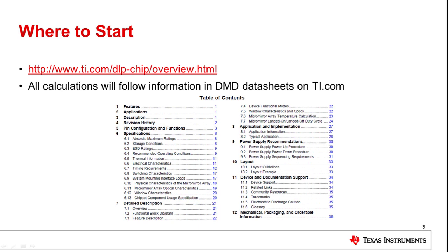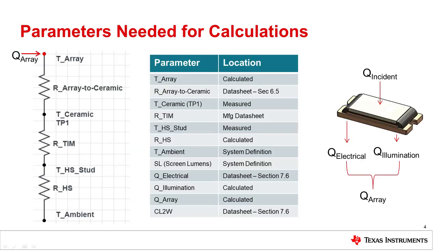Once you have downloaded the data sheet, scroll to the table of contents. There are three different sections this video will highlight. Before we begin, I want to highlight all the parameters needed for the calculation of the DMD heat load and array temperature. The thermal resistance network on the left shows all the parameters in a typical thermal management system. The illustration on the right shows how the total heat load of the DMD is calculated, and both will be further discussed in the following slides. All parameters in the middle table are necessary for the calculation, with the location defined in the right column.